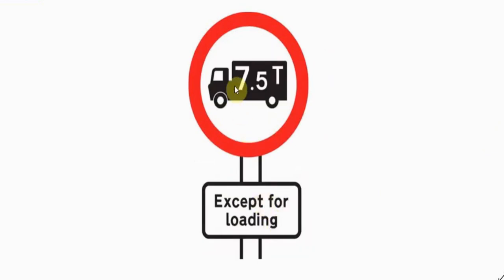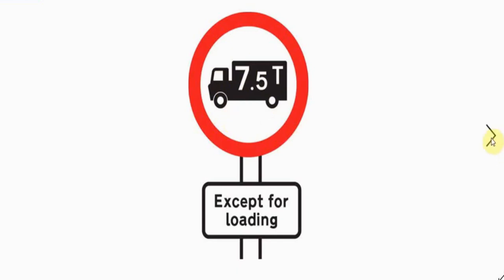This one is saying anything above 7.5 tons can't drive down this road, unless you're loading - for example, delivering to or picking up from a shop or warehouse. The 7.5 tons doesn't just mean the weight of the vehicle alone, but the weight of the vehicle, you inside it, and the cargo. This is called the gross weight, and you can't drive down there if you exceed that weight.